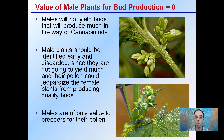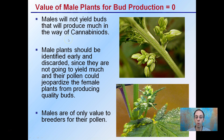The reason most growers only grow females and discard males is that males will not yield buds that produce much in the way of cannabinoids — so the value of male plants in bud production is basically zero. Growing males is more important for breeders, but not for those looking to produce cannabinoids. Male plants should be identified early and discarded, since their pollen could jeopardize female plants from producing quality buds and higher cannabinoids. If a female plant is producing seeds, its cannabinoid production will suffer. The only value for males is for breeders using their pollen to create viable seeds and genetic variation.